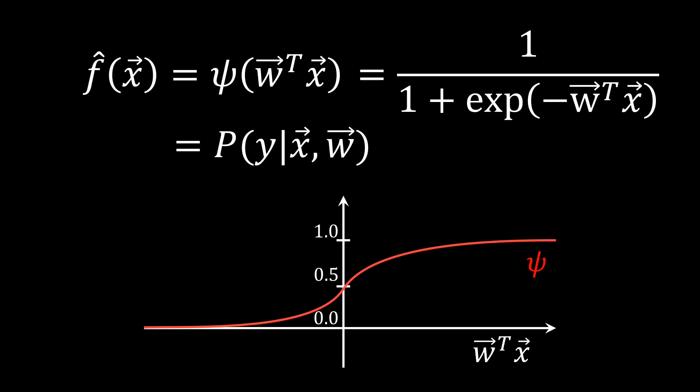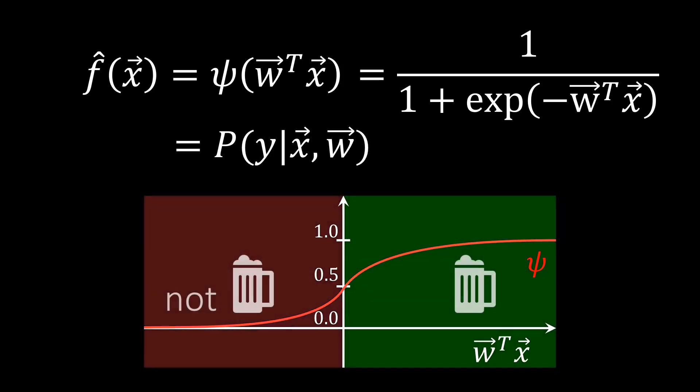Given our output, we can classify a sample as beer if the probability given by psi is larger than 0.5. Note that this gives the same decision boundary as the indicator function before, as everything with a positive regression value will be classified as beer. However, the smooth logistic function and the probabilistic interpretation give us a way to train our weight vector w. Let's discuss this training next.